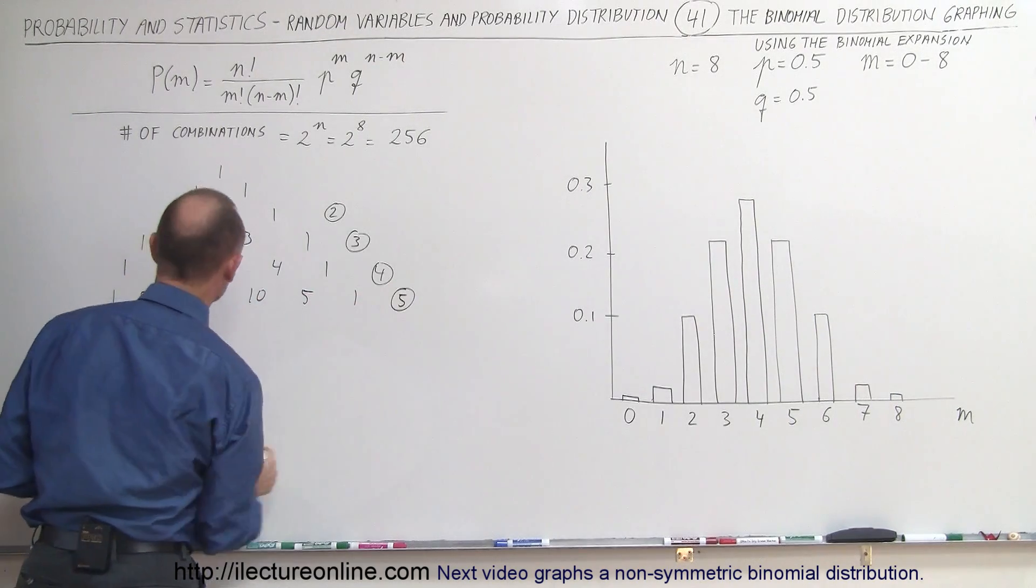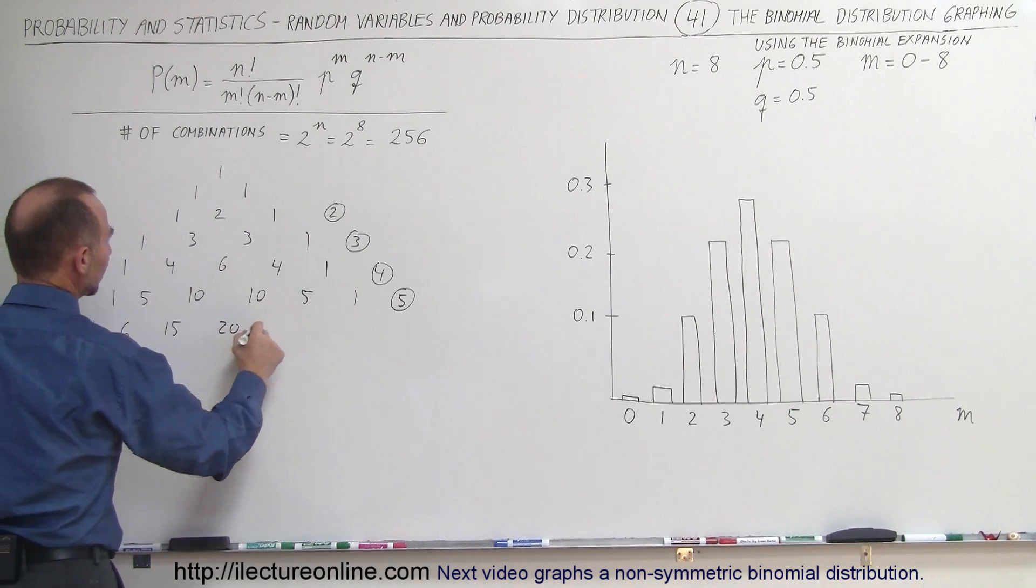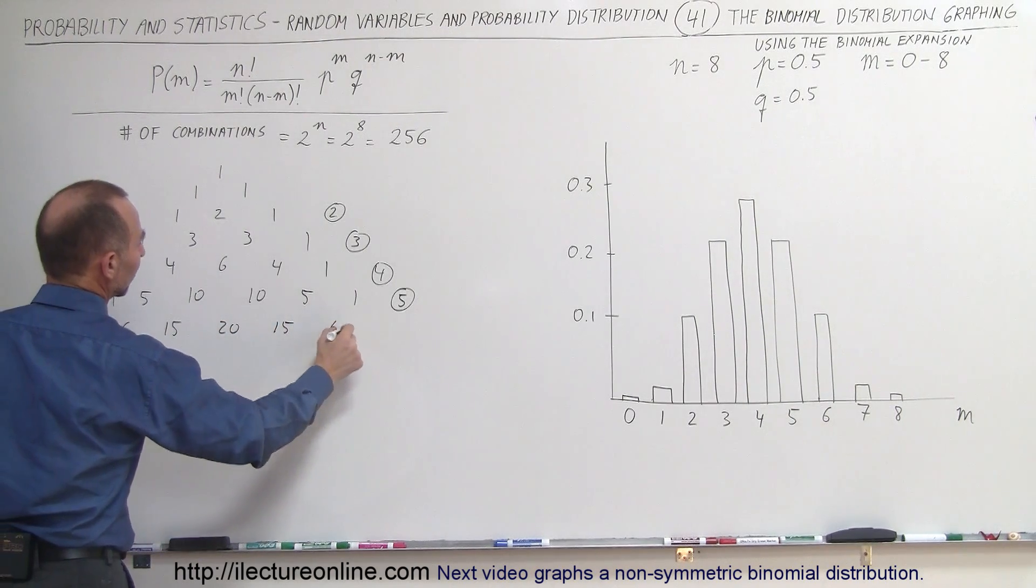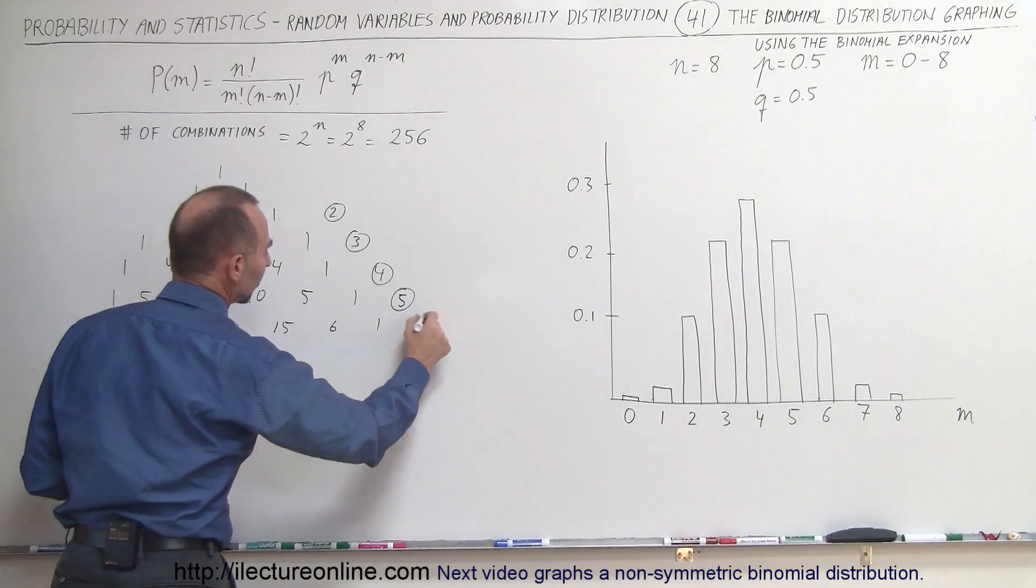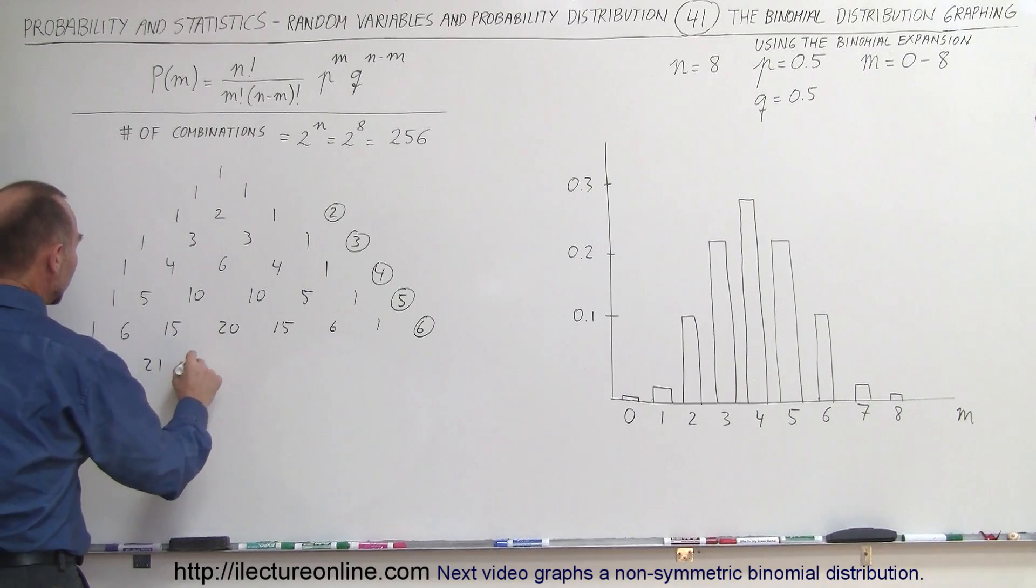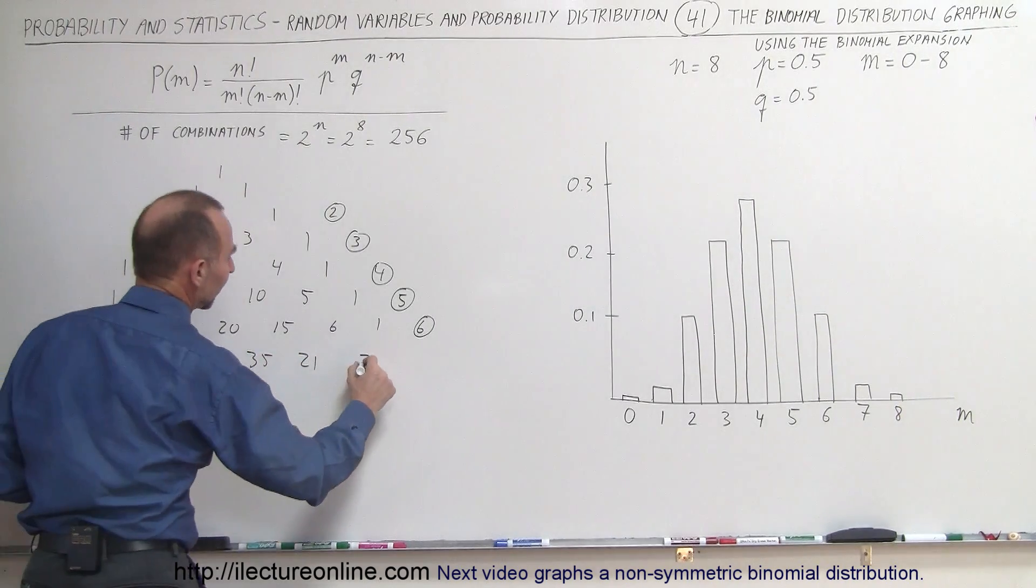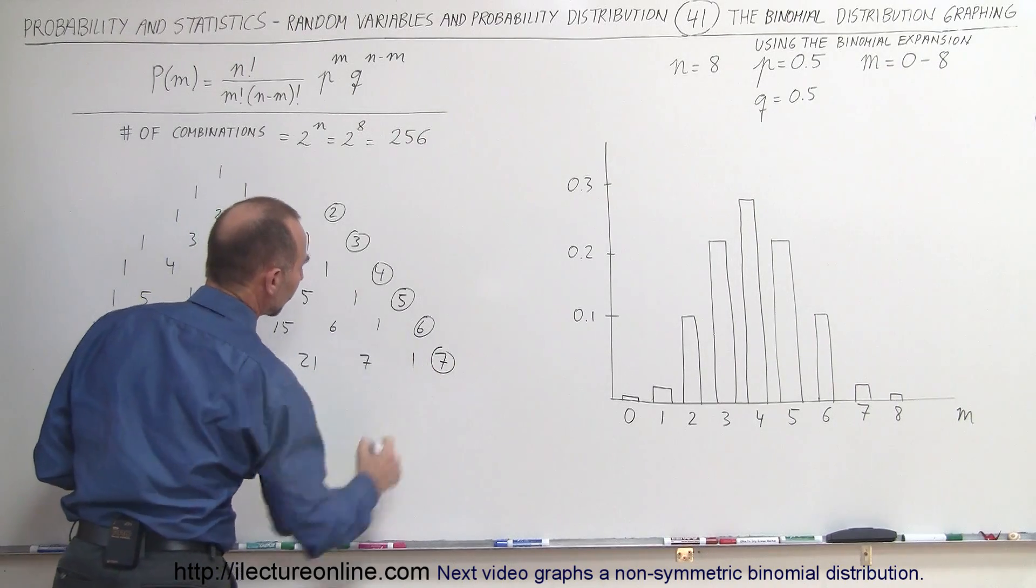So 1, 6, 15, 20, 15, 6, and 1. That's for 6 trials. We're almost there. 2 more rows. So we have 1, 7, 21, 35, 35, 21, 7, and 1. That's for 7 trials.